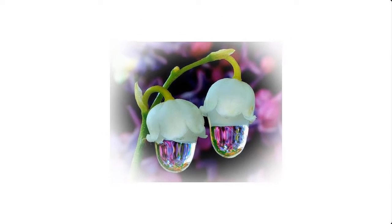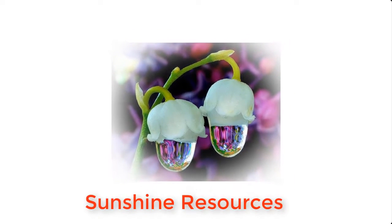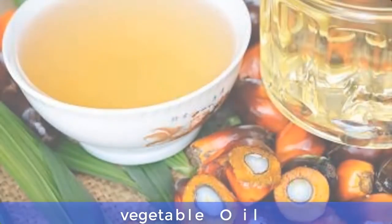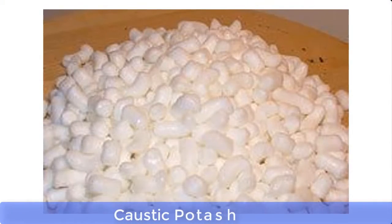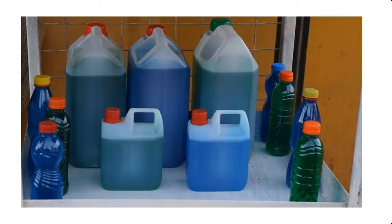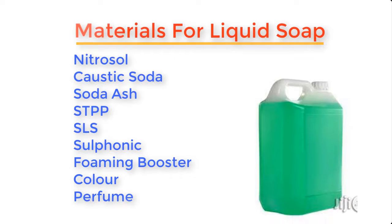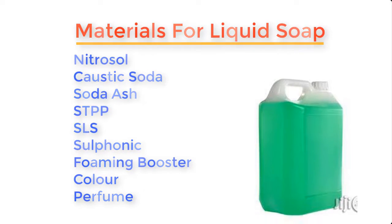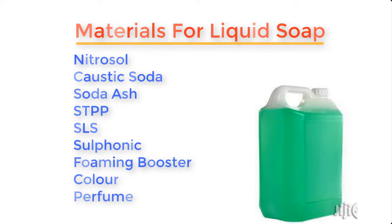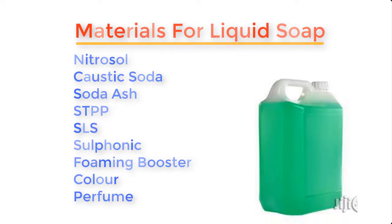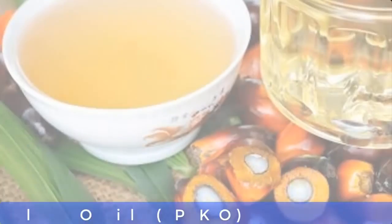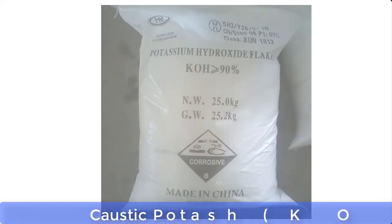Hello and welcome. My name is Sunshine, the project manager at Sunshine Resources. In this video I'm going to show you how to make liquid soap with just two materials: vegetable oil and caustic potash. In our previous videos we produced liquid soap using about eight or nine items such as nitrosol, caustic soda, soda ash, SDPP, SLS, sulfonic acid, foaming booster, color, and perfume. But in this particular video we will be producing liquid soap with just two major materials.